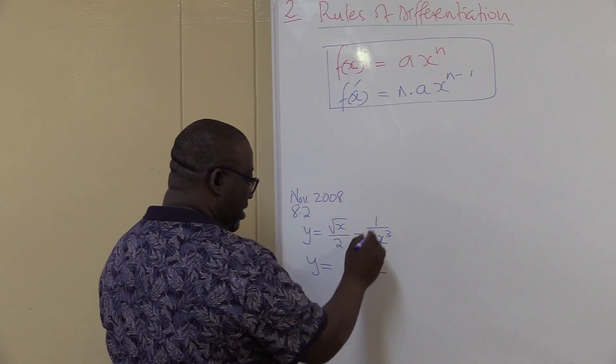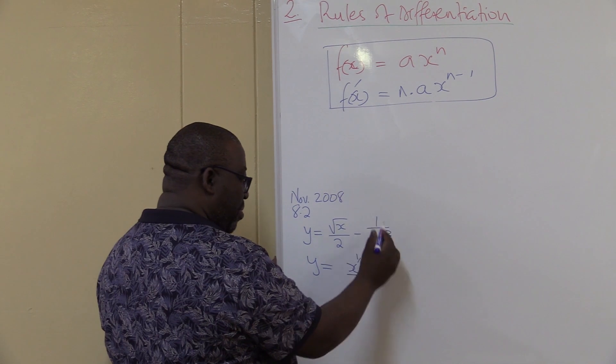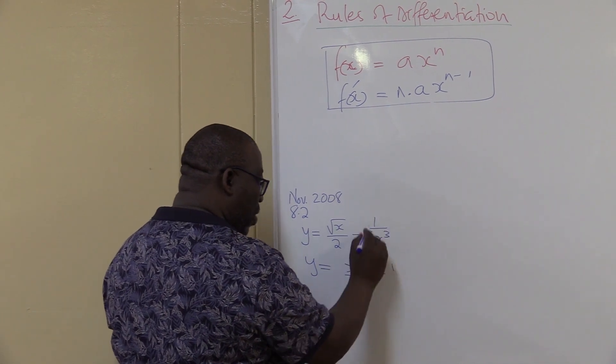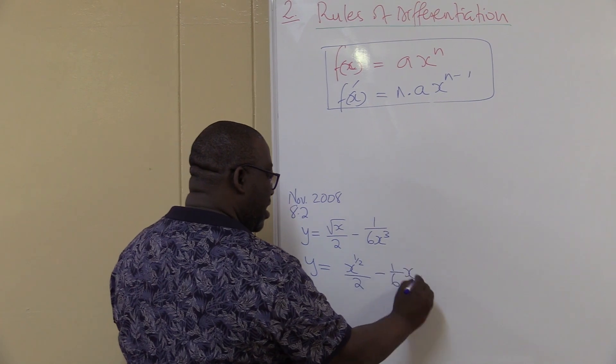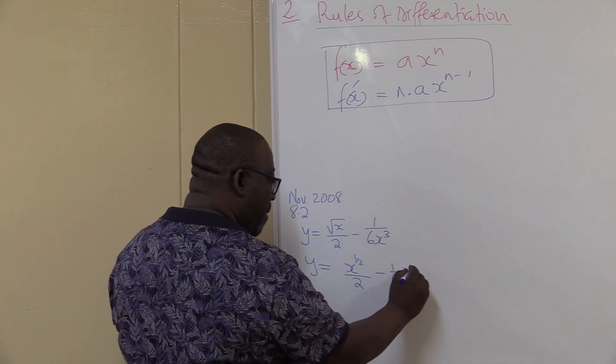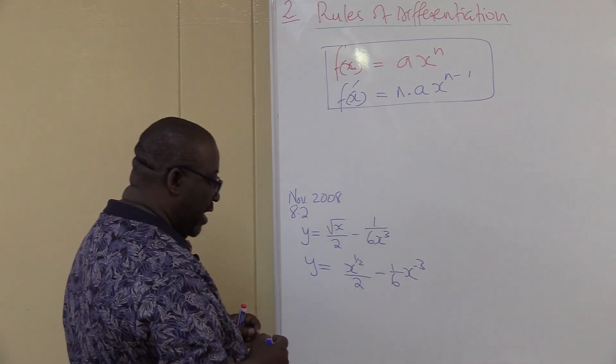Minus the other one. Let's arrange this one. I've got to take this one on top, it's going to be 1, this one over 6, x. If you take it up it will be minus 3, if you take it down it will be plus 3. Alright?